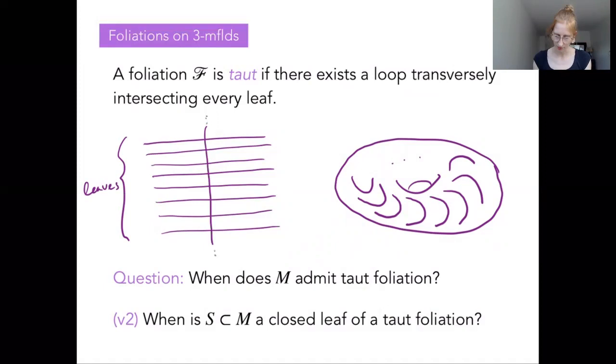So I've drawn a cartoon on the left here of a one-dimension lower cartoon of the foliation. So these horizontal lines we're thinking of as the leaves, and then our loop will come through and intersect every leaf transversely. So not necessarily perpendicularly, but we won't have any tangencies.